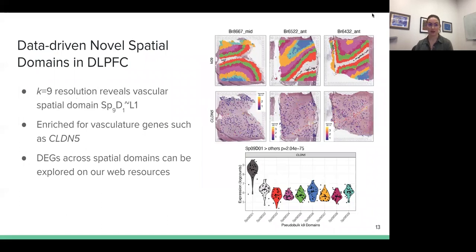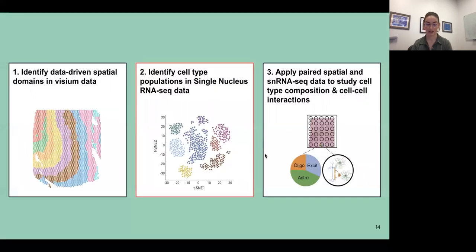At all these different resolutions, we are able to find novel spatial domains in the DLPFC. So one example I want to point out is that the K of 9 resolution, that split of layer one revealed a vascular spatial domain. So that's this very thin line of black points. And we found that this domain was enriched for vascular genes such as CLDN5. So this kind of refines what layer one and pulls out that vascular tissue. So all these differentially expressed genes can be explored in our web resources. And we have different tests across the spatial domains, including ANOVA and pairwise tests. So that data can be explored through different lenses.